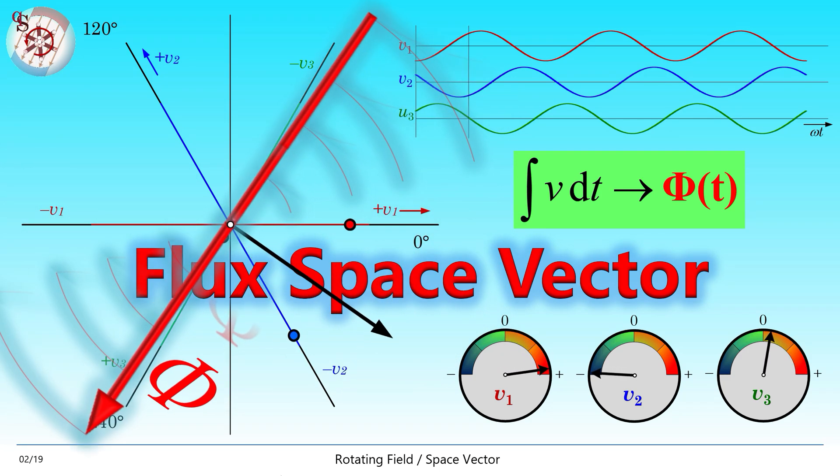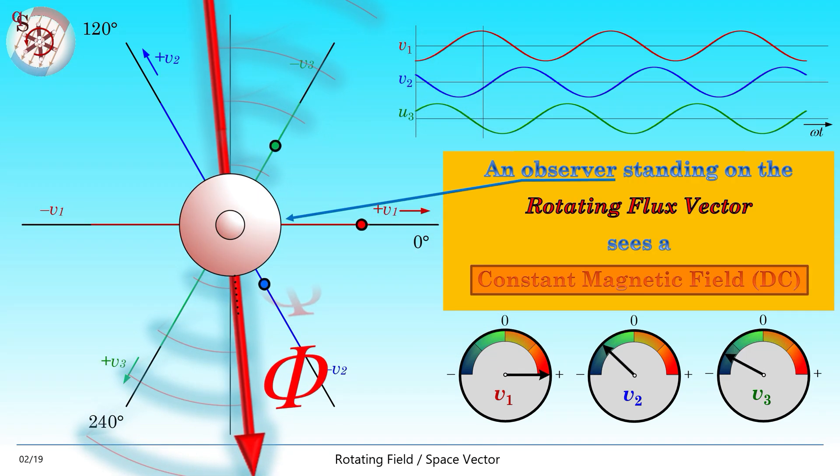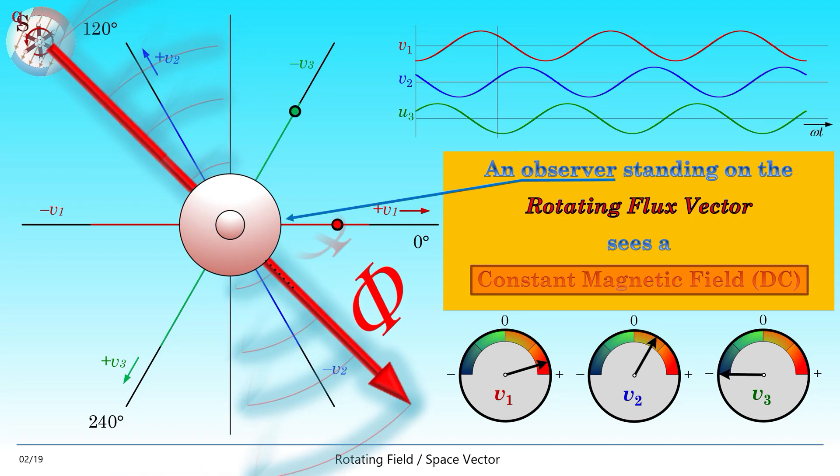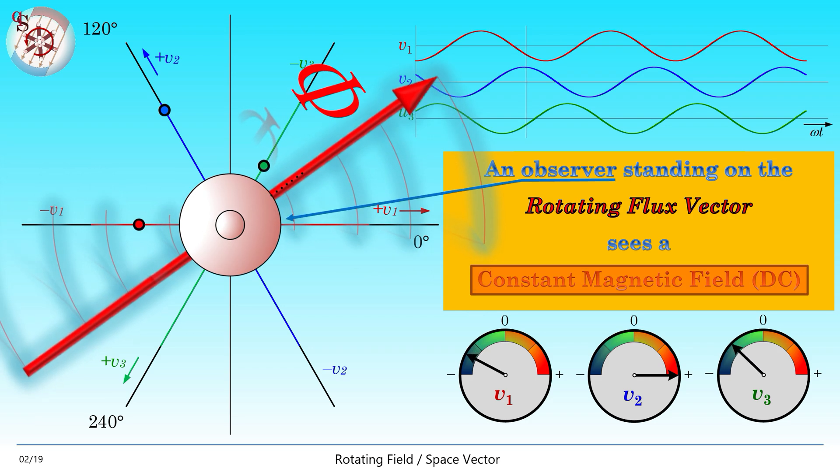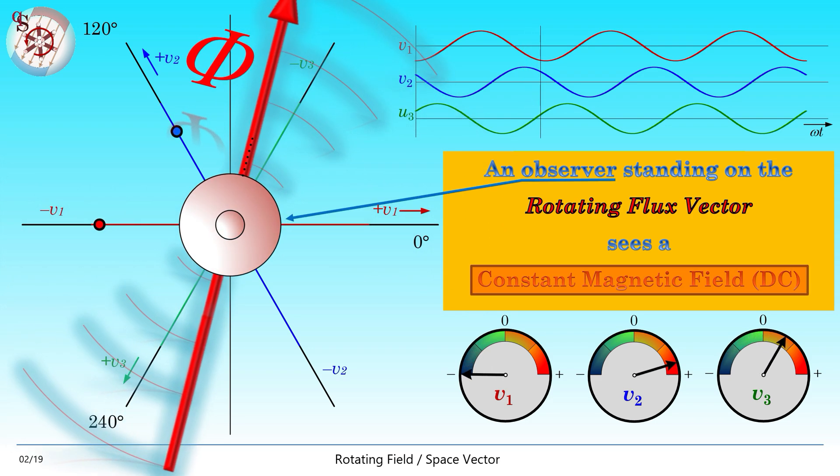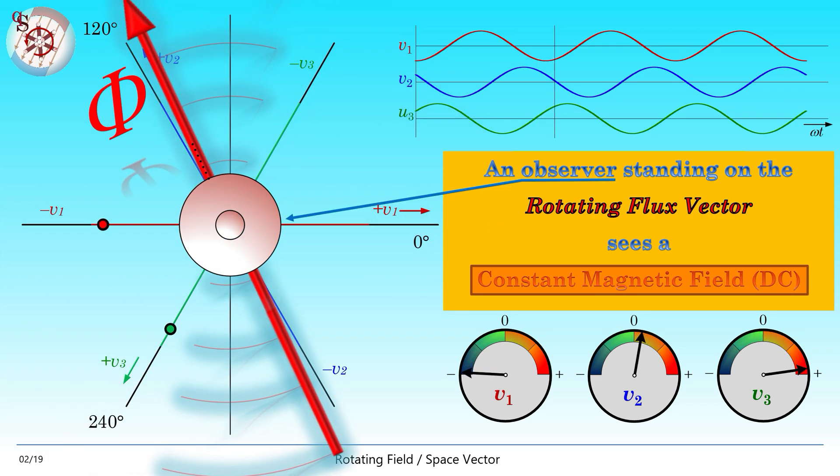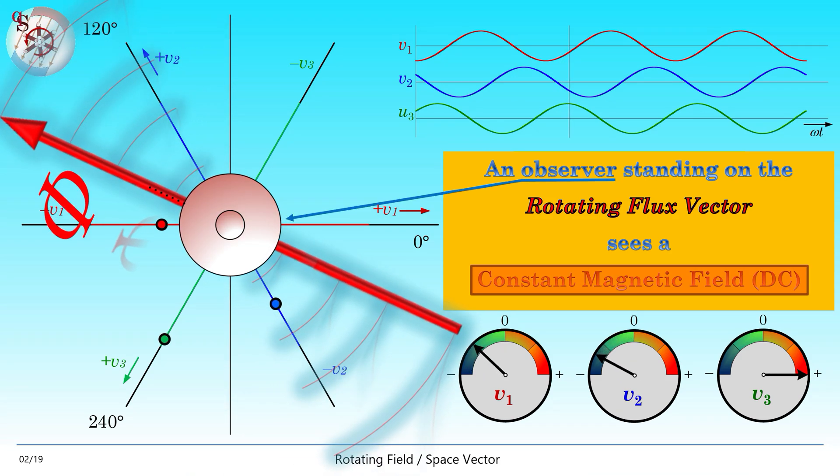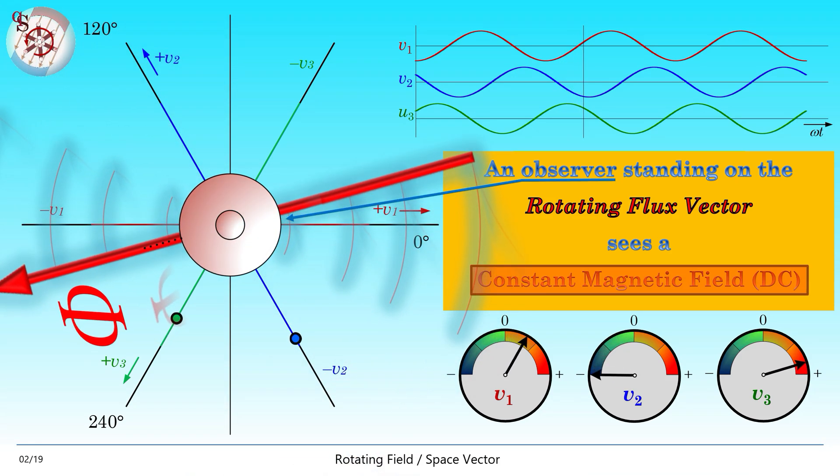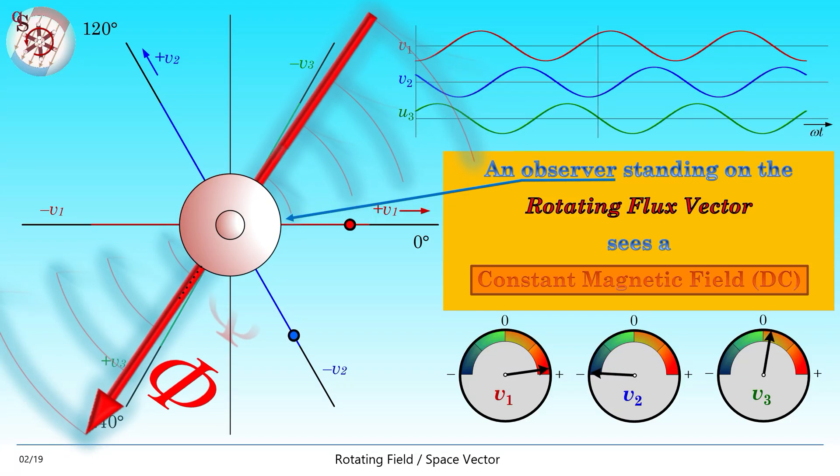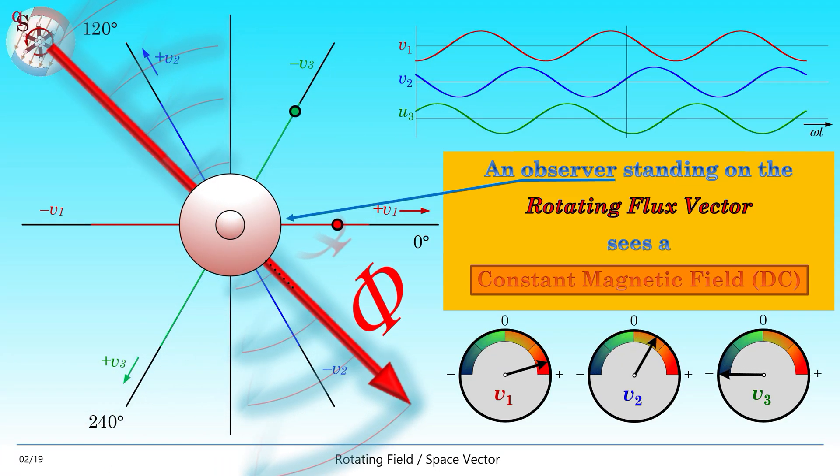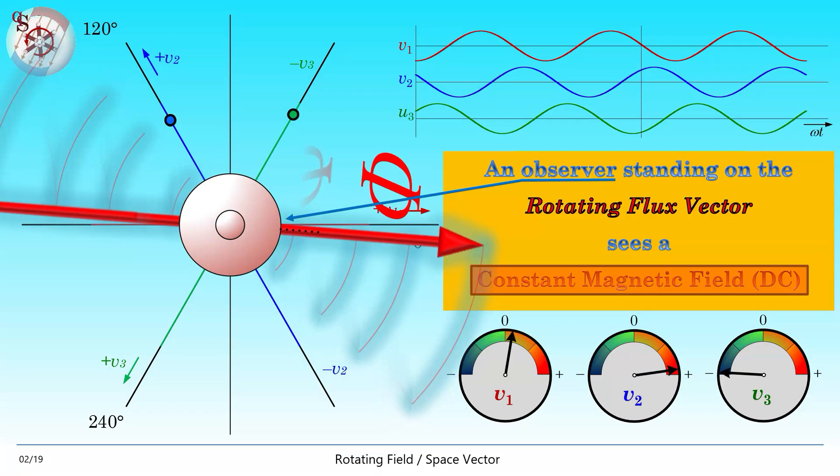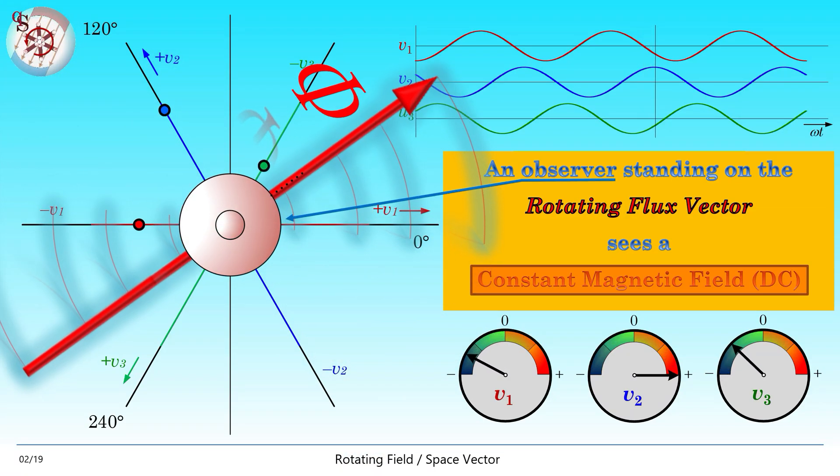Now we place an observer on this flux vector. That is for example the visitor of a beer tent at the Oktoberfest who usually should not recognize the earth is rotating and if he does it certainly is not related to earth rotation. Anyway, our observer looks at a constant fixed magnetic flux and in no way he will find out that he rotates through space together with a vector he is standing on.